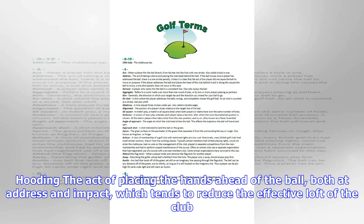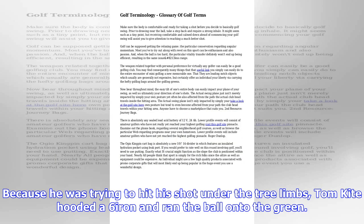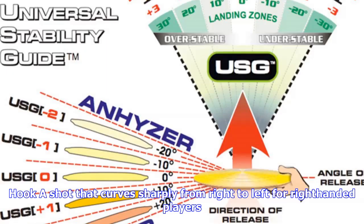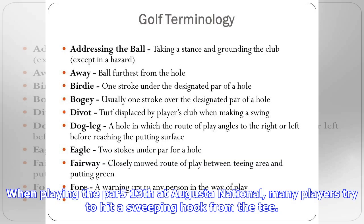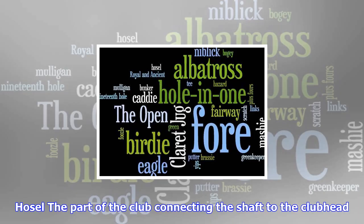Grand Slam: the modern or professional Grand Slam describes winning the four professional major championships — the PGA Championship, the Masters, and the United States and British Opens — in a calendar year. The career Grand Slam describes winning each of these events once in a career. Only Gene Sarazen, Ben Hogan, Gary Player, Jack Nicklaus and Tiger Woods have accomplished this. No one has ever won the modern Grand Slam.